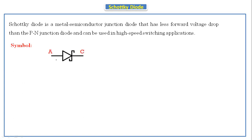The symbol of the Schottky diode has two terminals: anode and cathode. The anode terminal is made up of metal, and the cathode terminal is N-type. When we compare with the PN junction diode, here we are replacing the P-type with metal — we are not using P-type semiconductor. We are using metal only. The N-type remains as it is, but instead of P-type, we use metal. That is the only difference between the PN junction diode and the Schottky diode.